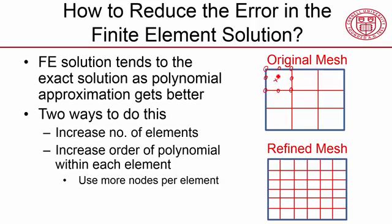If you want the temperature at a point, it's calculated as a weighted average of eight values — three plus three plus two. This means you have a second-order interpolation: you can write a second-order interpolation in this direction and in this direction, so you have second-order interpolation in both directions.